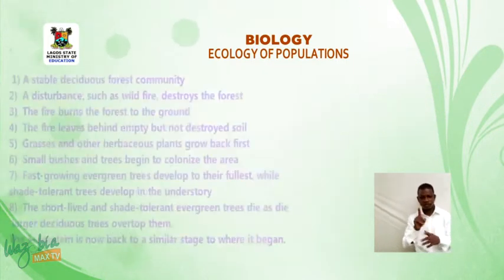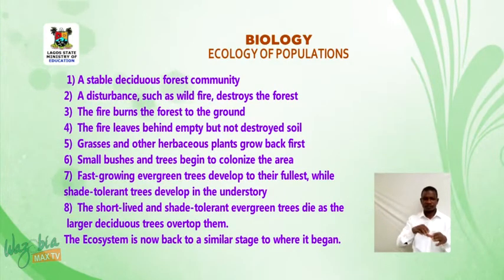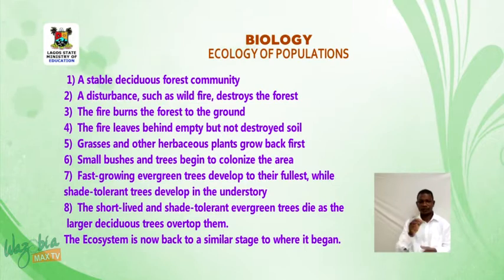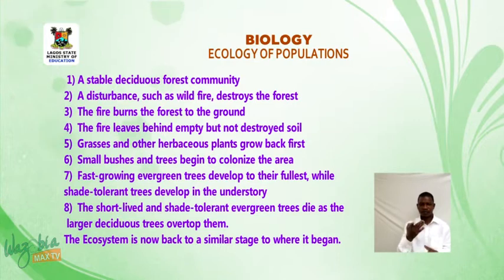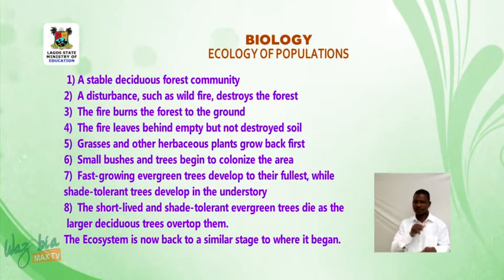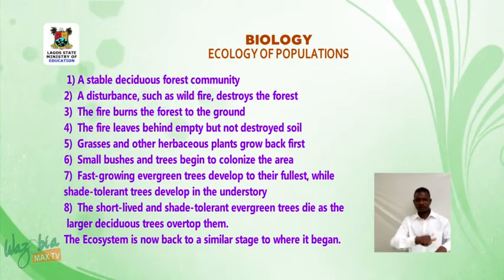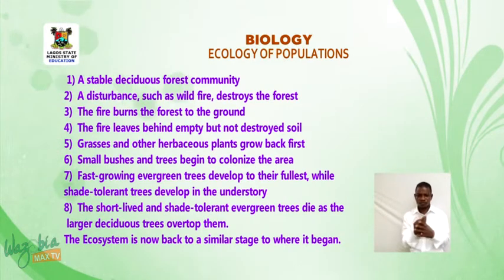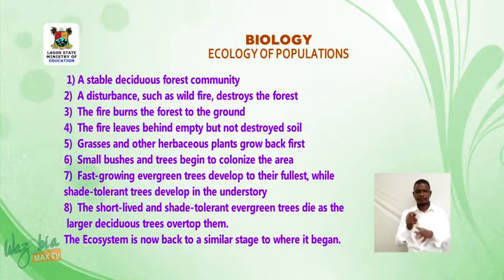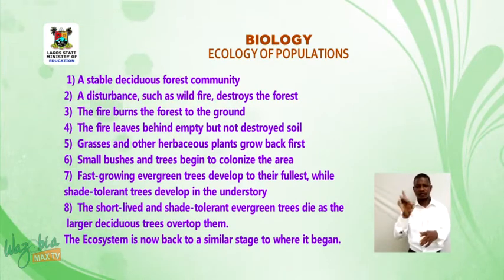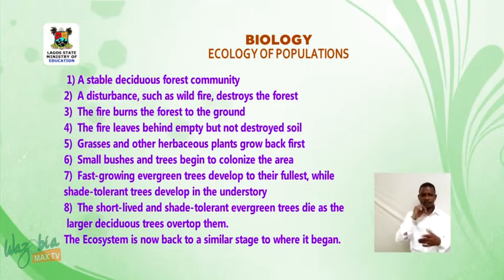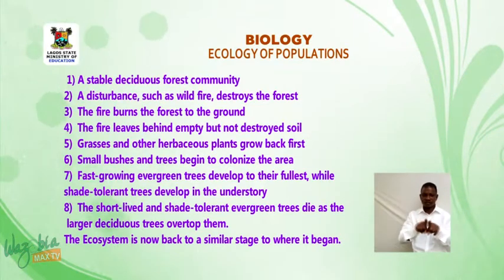An example of secondary succession by stages: one — a stable deciduous forest community; two — a disturbance such as wildfire destroys the forest; three — the fire burns the forest to the ground; four — the fire leaves behind empty but not destroyed soil; five — grasses and other herbaceous plants grow back first; six — small bushes and trees begin to colonize the area; seven — fast-growing evergreen trees develop fully while shade-tolerant trees develop in the understory; eight — the short-leaved shade-tolerant evergreen trees die as larger deciduous trees overtop them, and the ecosystem returns to a stage similar to where it began.